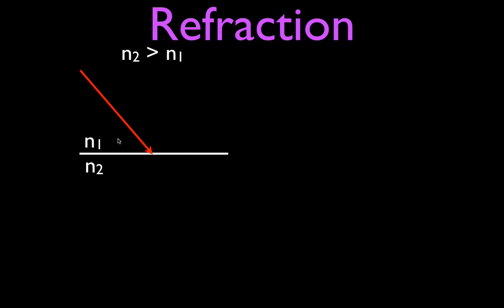If the light ray were to go straight across, it would follow this path — but it doesn't do that. The first thing we always do is draw the normal line. Please always draw the normal line first. The normal line is drawn perpendicular to the surface or interface between the two materials, and you want to draw it so it crosses the boundary exactly where the ray of light strikes it, so that the surface, the ray of light, and the normal line all come together at one point. It is drawn right there where the ray of light strikes that boundary, perpendicular to it.